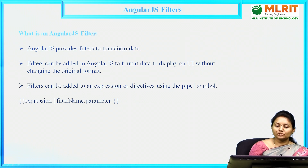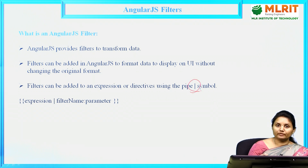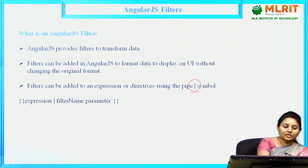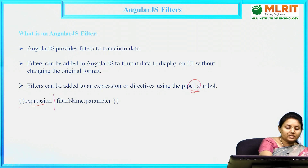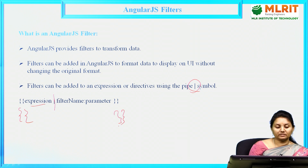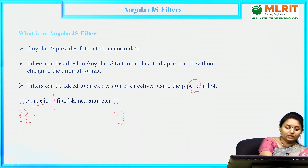Filters can be added to an expression or directives using the pipe symbol. The pipe symbol is used to separate one value from another. The syntax for writing filters is: you write the expression and the filter name both inside double braces, separated by the pipe symbol. You write the expression in double braces and separate that with the filter name.